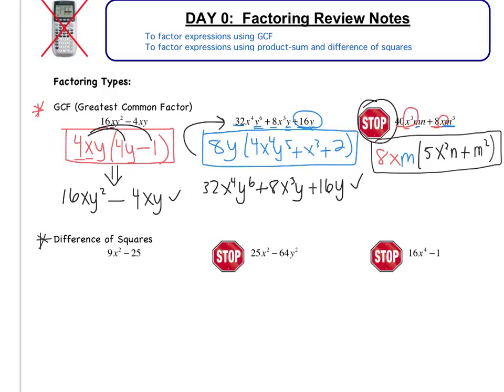Difference of squares means that you're subtracting, so that's the difference part, and you're subtracting perfect squares. So, looking at my first option, or my first problem, 9x squared minus 25. I definitely have the difference part. I have the subtraction. Do I have the perfect square part? Well, yes. 9x squared is 3x squared, and 25 is 5 squared. So, 3x squared gives me 9x squared. 5 gives me 25.